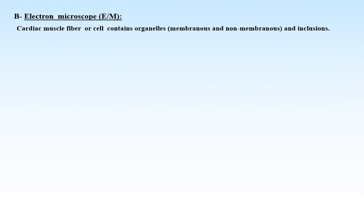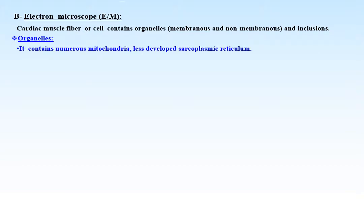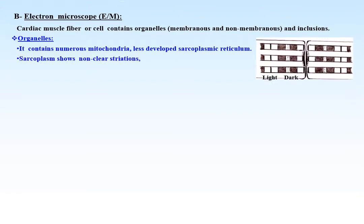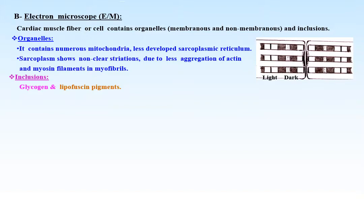By electron microscope, cardiac muscle fiber contains organelles — both membrane-bound and non-membrane-bound — and inclusions. It contains numerous mitochondria and less developed sarcoplasmic reticula. The sarcoplasm shows non-clear striations due to less aggregation of actin and myosin filaments. Inclusions are glycogen and lipofuscin pigments; lipofuscin pigments are waste products that increase in old age, a condition called brown atrophy of the heart.